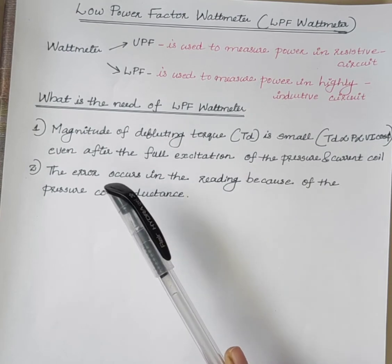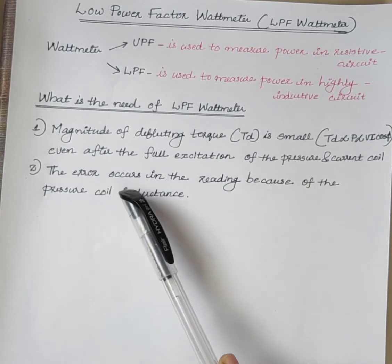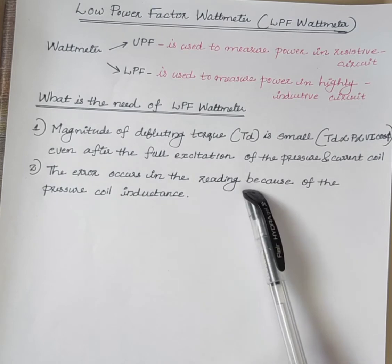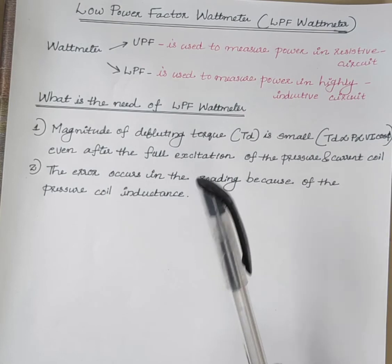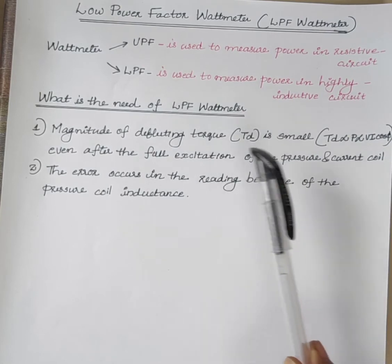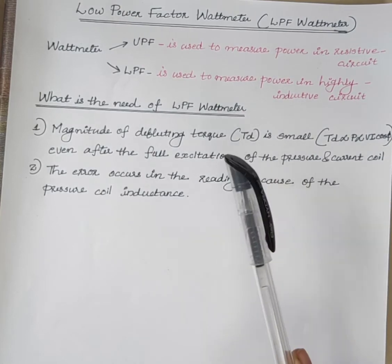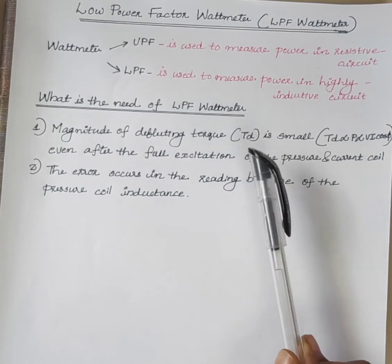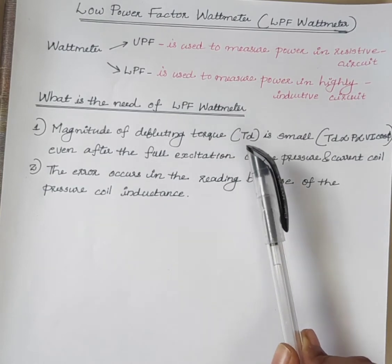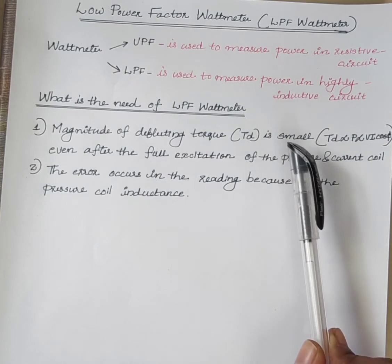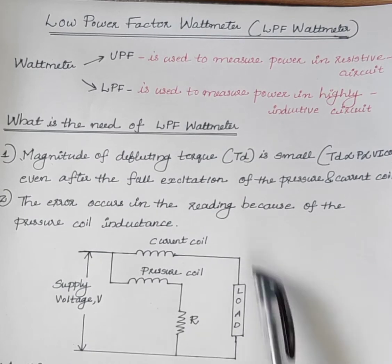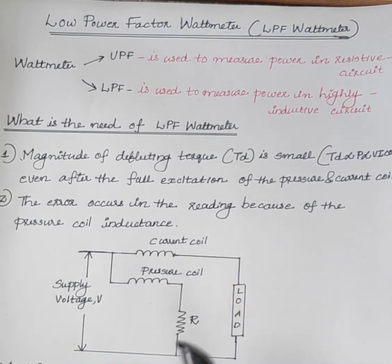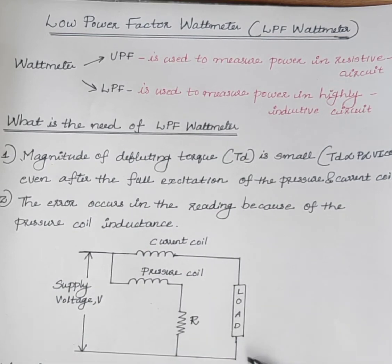The second reason is, if we are using an ordinary watt meter, error occurs in the reading because of the pressure coil inductance. So, some additional features are added to the ordinary watt meter so that the meter can measure the power of the low power factor circuit. Three major modifications have to be made in an ordinary watt meter to convert it into a low power factor watt meter.